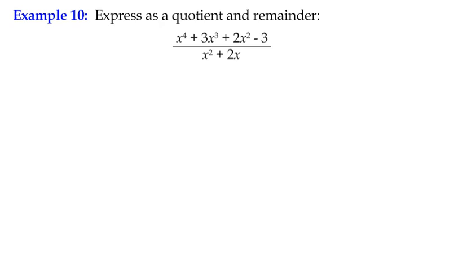We're going to take the dividend here and we're going to write it underneath our division step. x to the power of 4 plus 3x cubed plus 2x squared. There's no x term, you'll notice here.